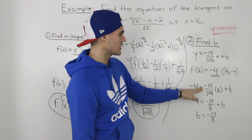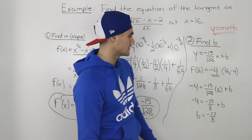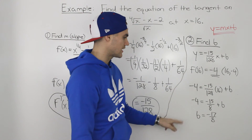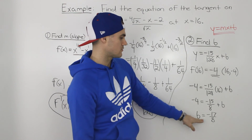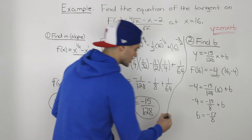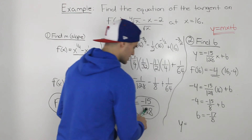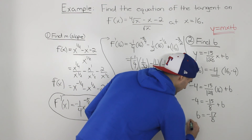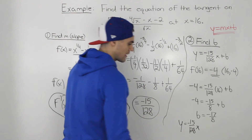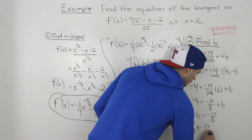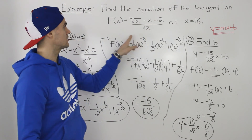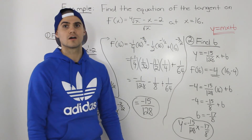Plugging that coordinate into the equation and solving for b: negative 4 equals negative 15/128 times 16 plus b. Multiplying gives negative 15/8, so b equals negative 4 plus 15/8, which is negative 17/8. The final equation for the tangent is y equals negative 15/128 times x plus negative 17/8. That is the equation of the tangent on this function at x equals 16.